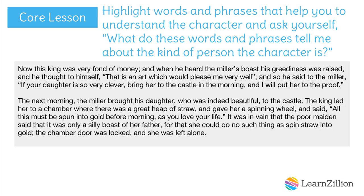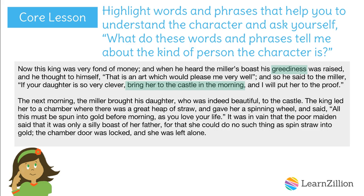Next, we highlight the specific words from the text that help us to understand the king. Doing this will help me justify my answer to the question I've been asked. I will highlight greediness first. That tells me that the king is never satisfied — he always wants more. Next, I'll highlight bring her to the castle in the morning. This phrase helps me to understand that the king is a demanding person. And I will highlight as you love your life. These words make me think that the king is very cruel — he will kill the daughter if she doesn't spin the straw into gold. All of these words and phrases tell me that the king is not a very nice person.